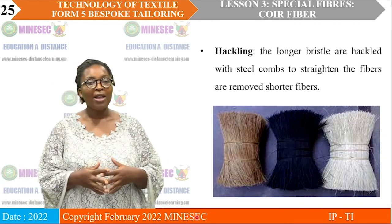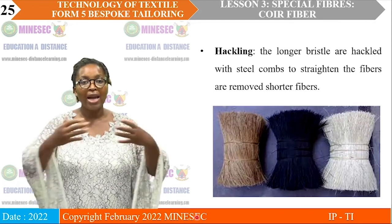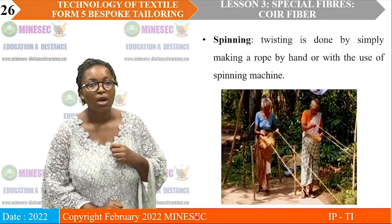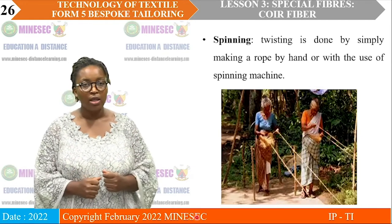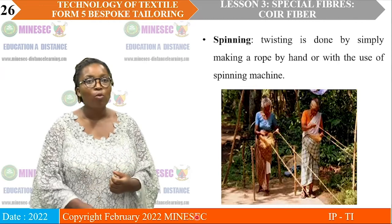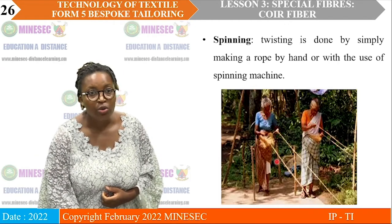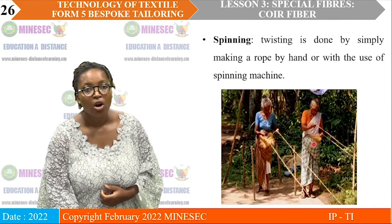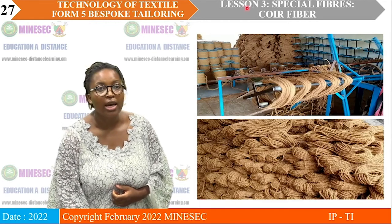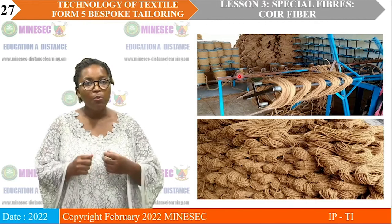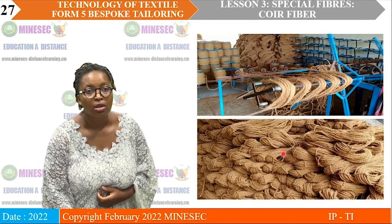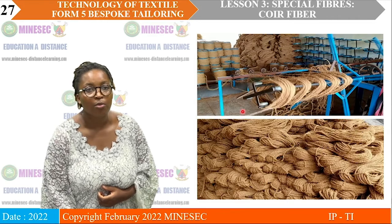After washing and drying, we have hackling — like combing — to line fibers parallel, straighten them, and remove shorter fibers. Now the fibers are ready for spinning. Spinning is the twisting of two or more fibers together. This can be done by hand to make rope — as you can see the workers spinning with their hands — or using a spinning machine. We spin to have our rope, yarns, or cords. These are already spun fibers and spun yarns.